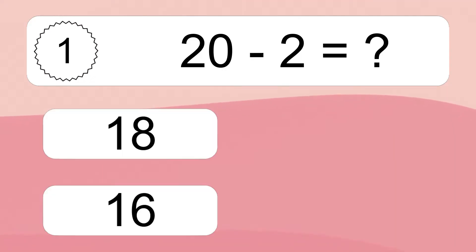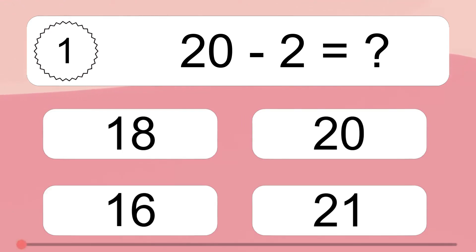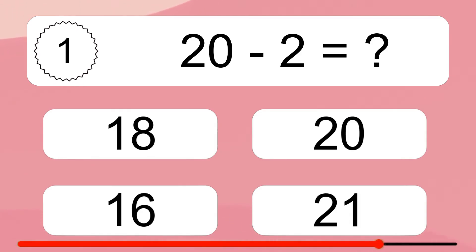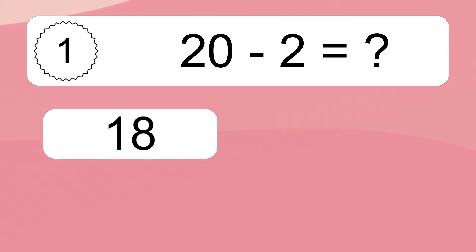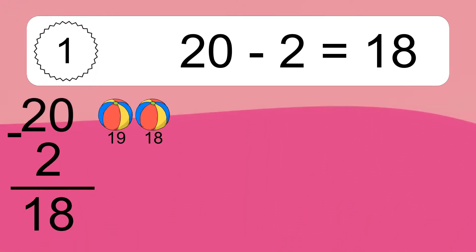20 minus 2 equals what? 20 minus 2 equals 18. Let's count it: 19, 18.